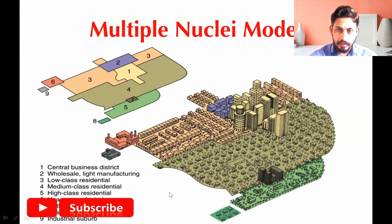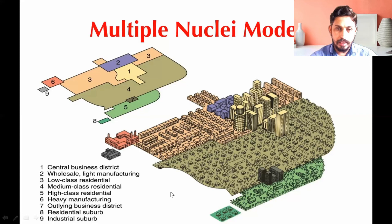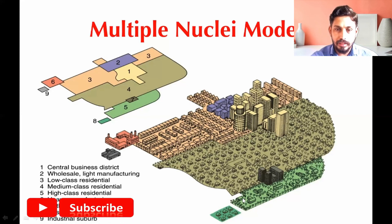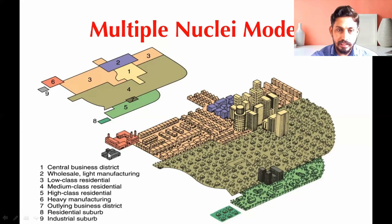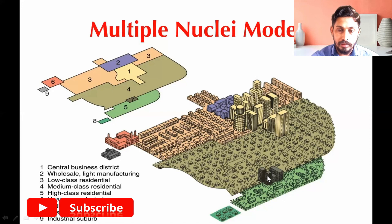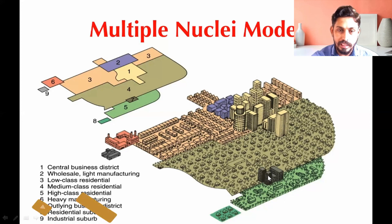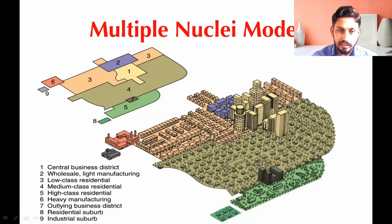In summary, this is the main CBD, this is the outlying CBD, and this is the heavy manufacturing zone accompanied by industrial suburbs. Related activities attract each other and form new nuclei, so multiple nuclei exist within the city — all very well described in the multiple nuclei theory.